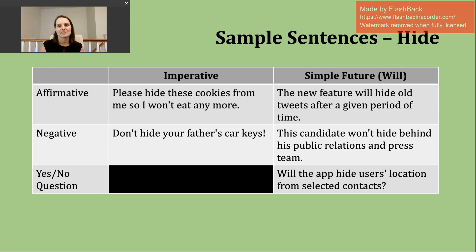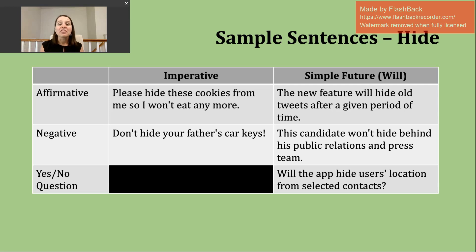Now let's take a look at the simple future using will. We use will and then the base verb, and that structure is the same no matter what the subject is. We tend to use will when making predictions, offers, promises, or quick decisions. Example: the new feature will hide old tweets after a given period of time — suggesting a promise of new technology where those tweets will not be able to be seen after so many years or months have passed.